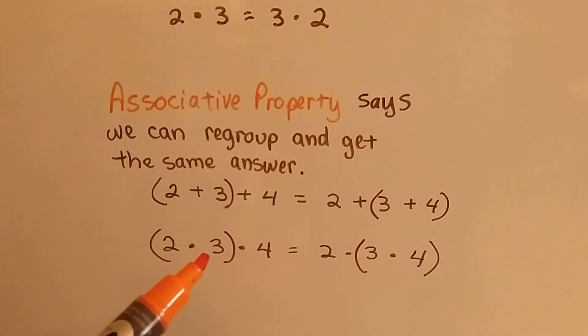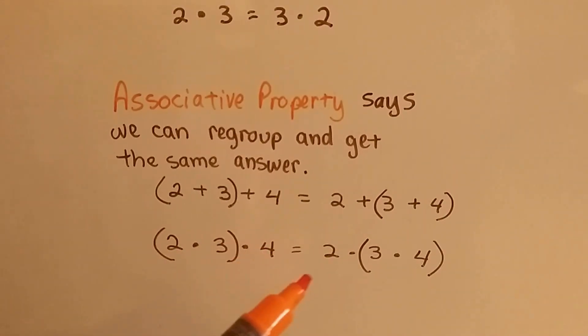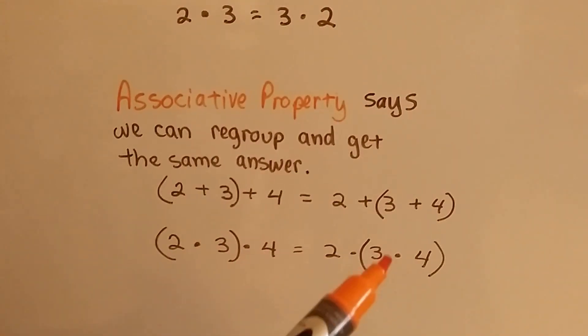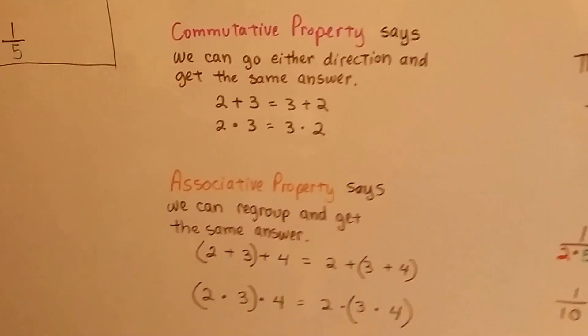We'll get the same answer. The associative property of multiplication says the same thing. 2 times 3, get the product, and multiply it by 4 is going to be the same as multiplying 3 times 4 and then multiplying that by 2. So we're going to use the commutative and associative properties.